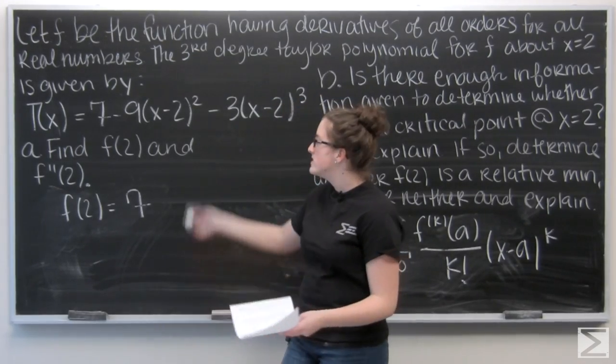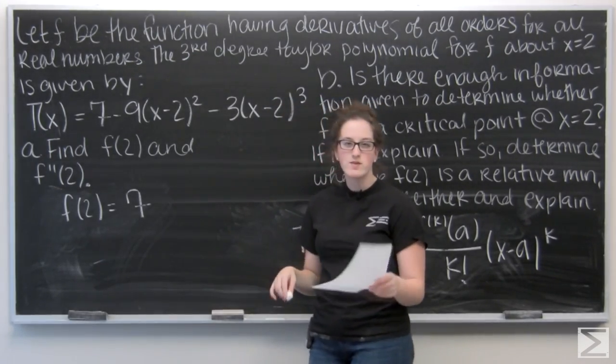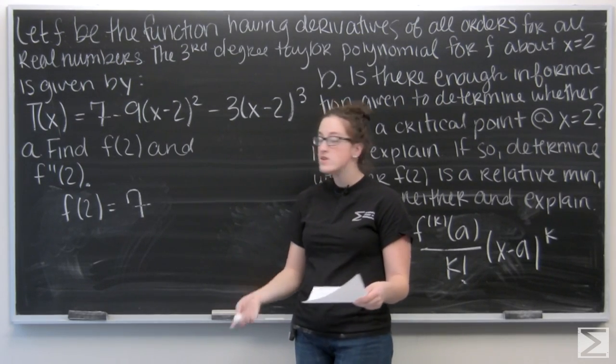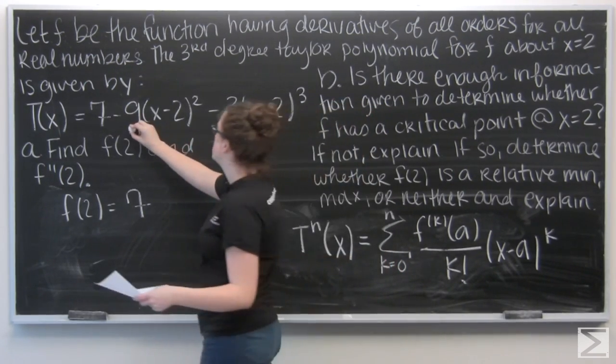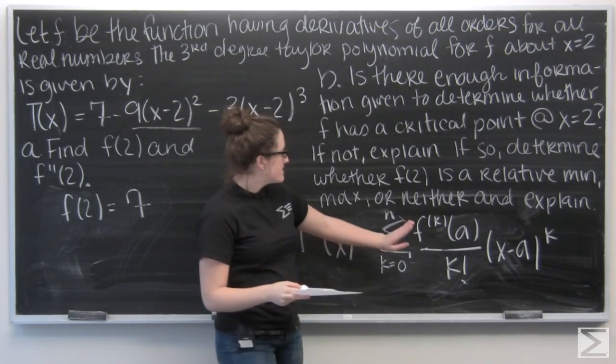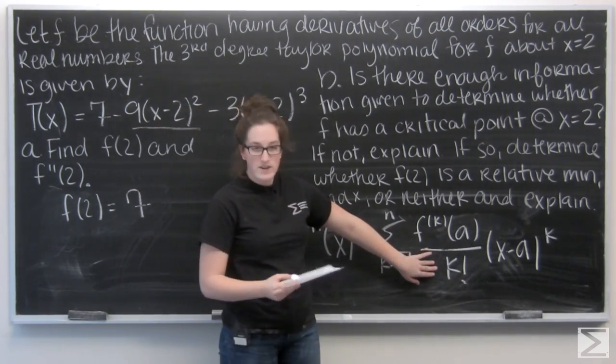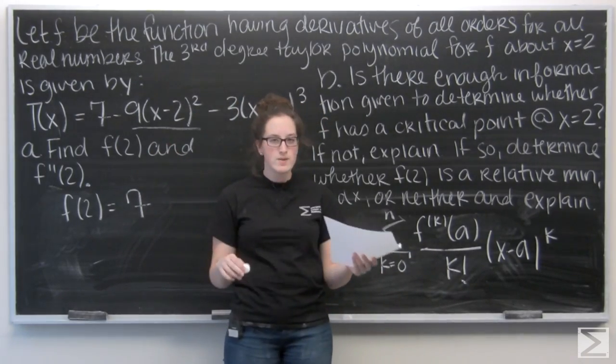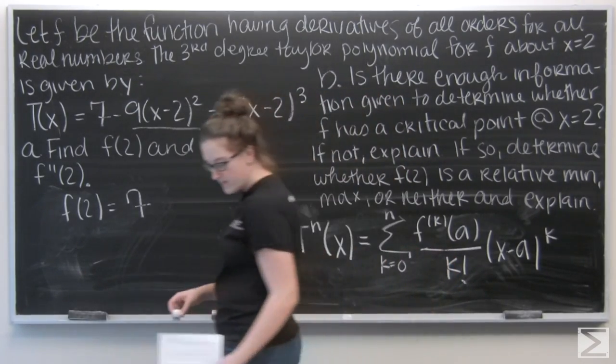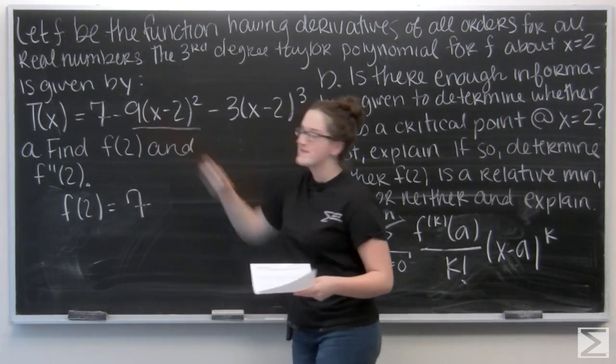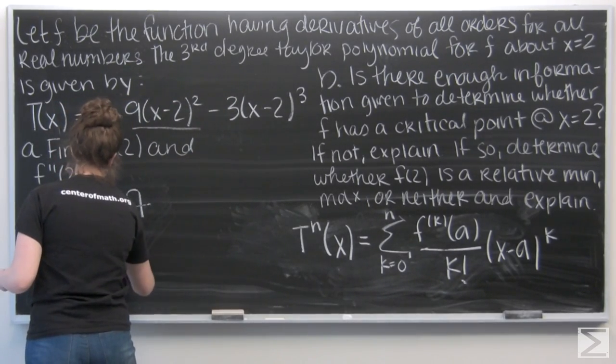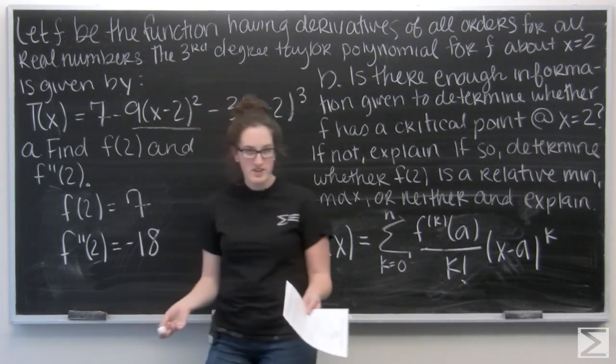Alright, now let's think about f double prime. We can notice in the polynomial that we're given that we actually don't have a first order term. We don't have anything that's just x. It jumps right to x squared. So, I know for f double prime, I'm going to be looking at this term right here. Well, let's think about what the coefficient is for a second order term. So, it's the second derivative of f divided by two factorial. So, that means nine is f double prime over two, making f double prime at two eighteen. Oh, negative eighteen, right? Because it's subtracting nine.